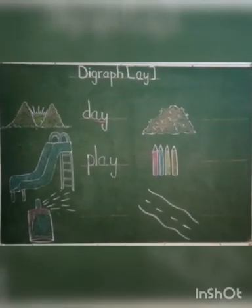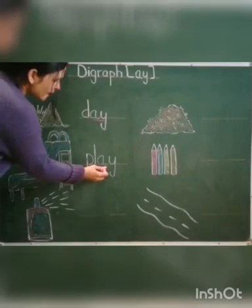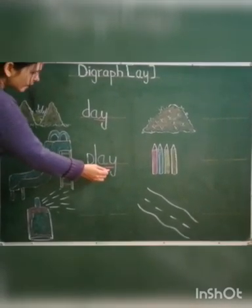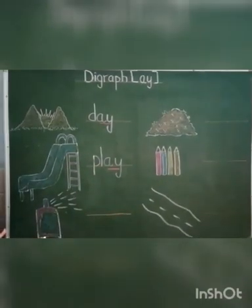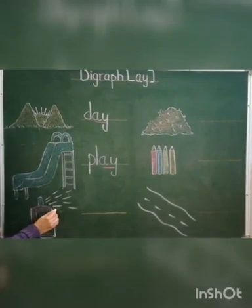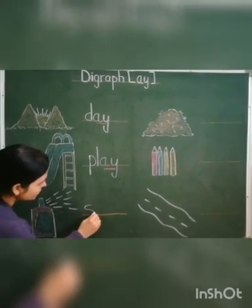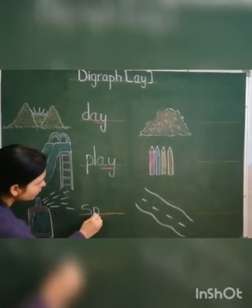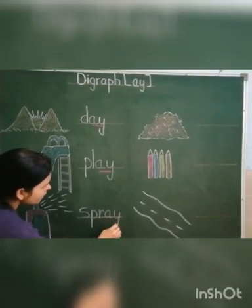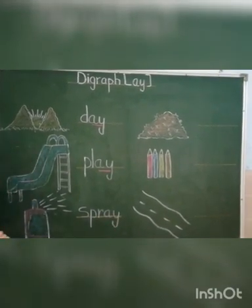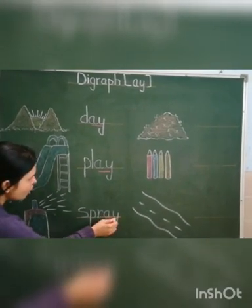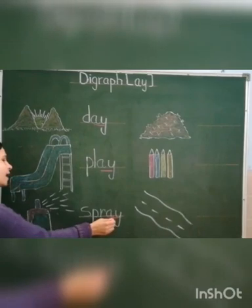And kids, our next picture is spray. And how do we write spray? S, P, R, A, Y. Spray. And kids, in this word, we can hear the A sound at the end.